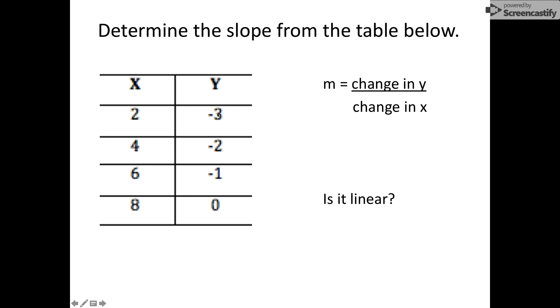Today's lesson is on slope from a table. So let's get started. You have your table here with four sets of coordinates: 2, negative 3; 4, negative 2; 6, negative 1; 8, 0. And it asks you to find the slope.